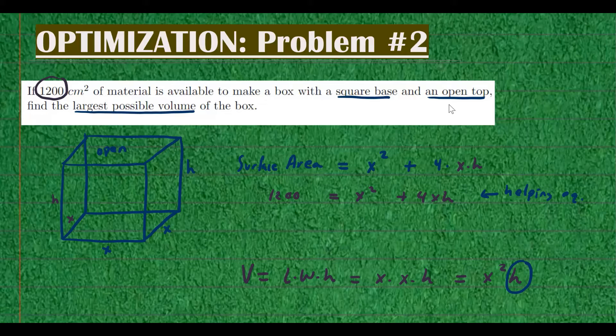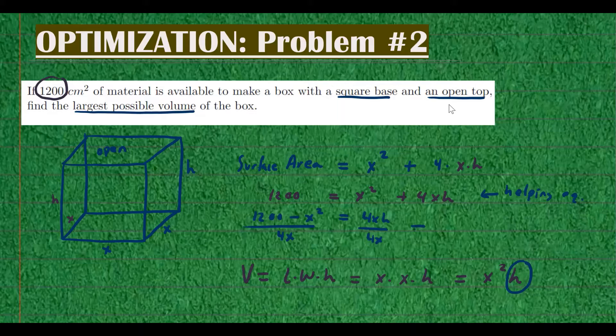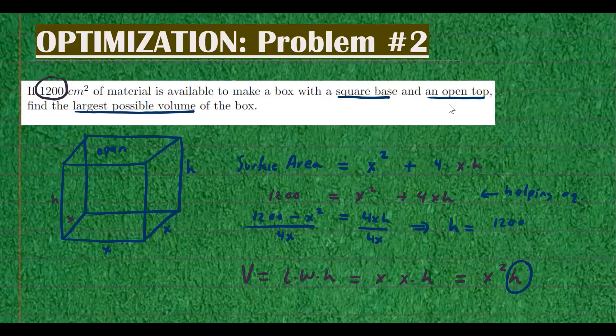So I'm going to go ahead and subtract x squared from both sides. So I have 1,200 minus x squared equals 4xh. And then I divide by 4x on both sides to solve for h. So that gives me h equals 1,200 divided by 4x. So that's what h is.